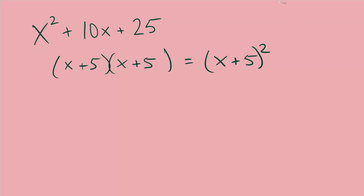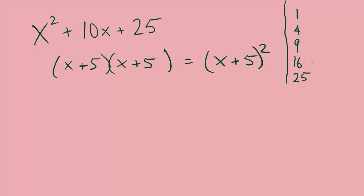This is similar to numbers we would call perfect squares — those numbers would be 1, 4, 9, 16, and so on. These are perfect squares because they can all be written as some number times itself.